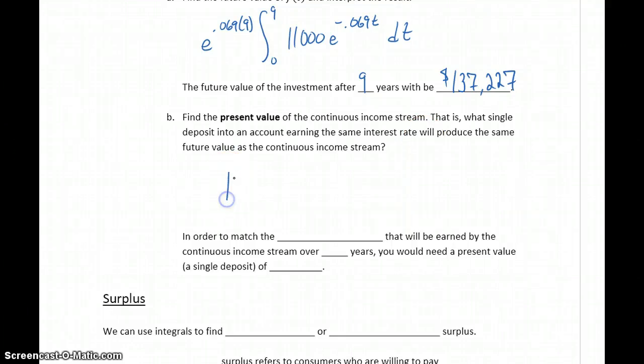So essentially, we want $137,227. That's our final amount. We want to invest this in a continuously compounded account. So we want to invest some principal P.